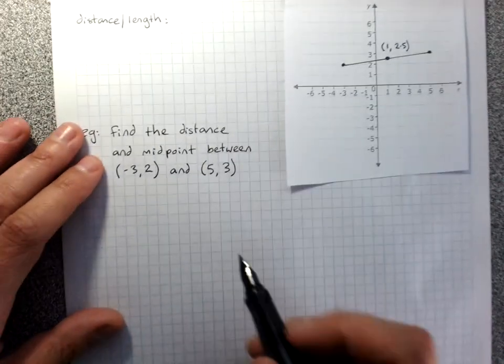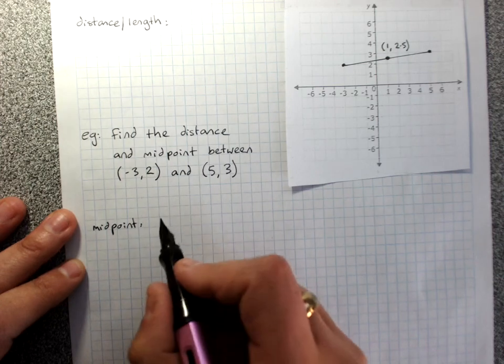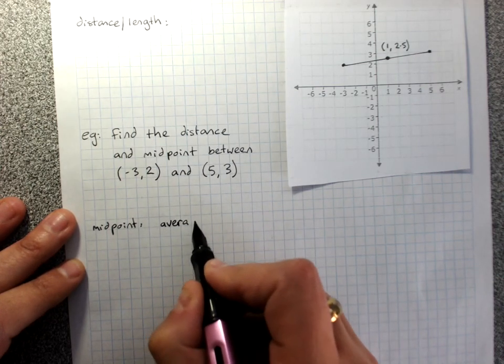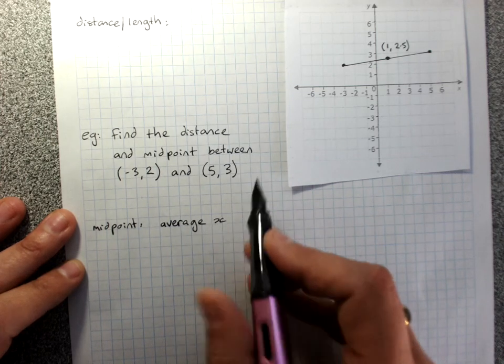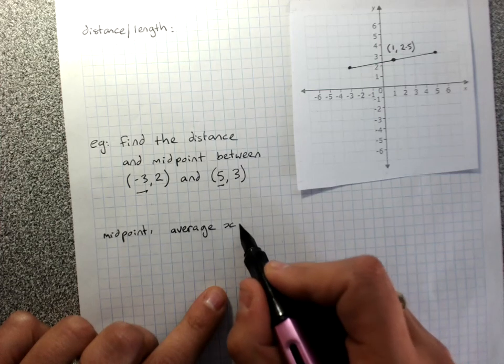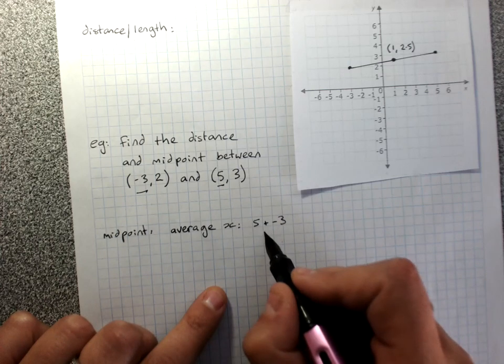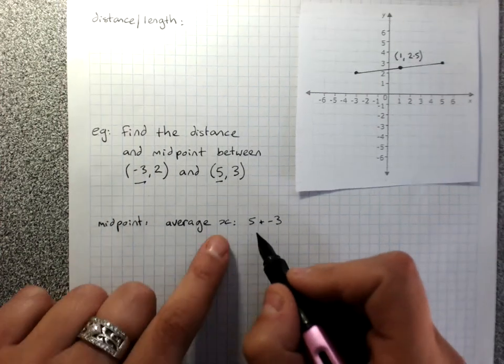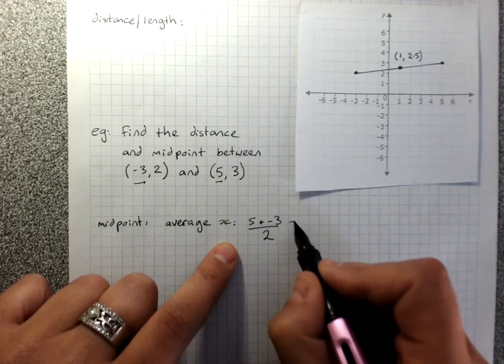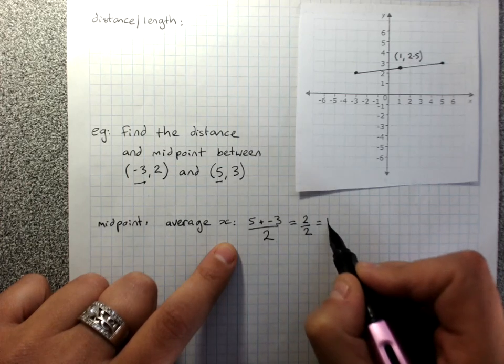Let's check that midpoint. The average of the x's gives me the x coordinate. So when I average the x's, I add them together. 5 plus negative 3 is 5 minus 3, which is 2. But I've got to average them, which means I divide by 2, so 5 minus 3 is 2, divided by 2 to average, I get 1.